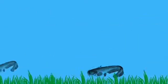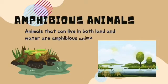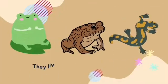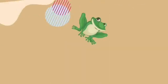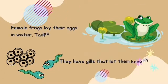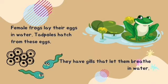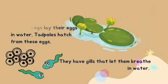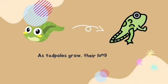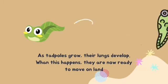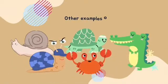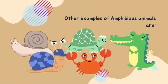Animals that can live both on land and in water are called amphibious animals. Frog, toad, and salamander live both on land and in water. Female frogs lay their eggs in water. Tadpoles hatch from these eggs and have gills that let them breathe in water. As tadpoles grow, their lungs develop, and they are ready to move on land. Other examples of amphibious animals are snail, crab, turtle, and crocodile.